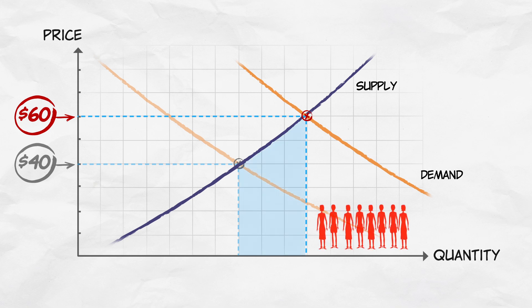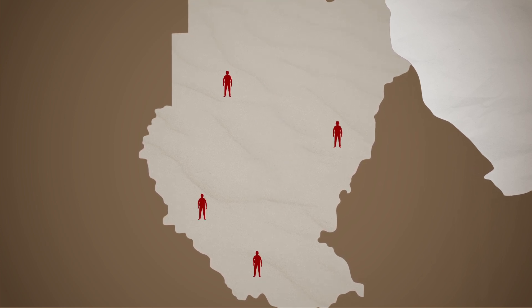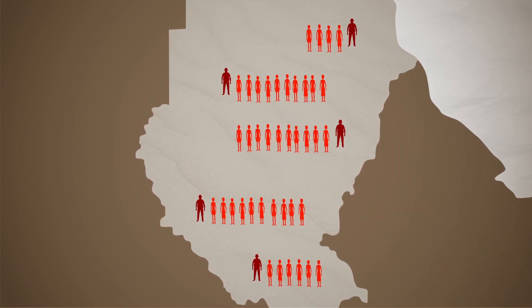That higher price will bring forth additional supply. So what are the people who round up and kidnap slaves going to do? They're going to increase their operations, have more raids, and take more people into slavery. We can already see there's at least a possibility that buying slaves and setting them free will be counterproductive, because we've set some people free but increased the incentives for kidnappers to bring more people into slavery.